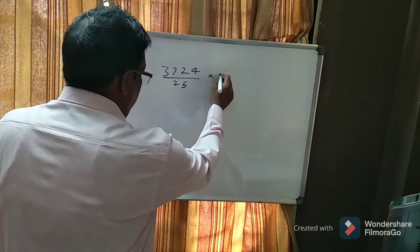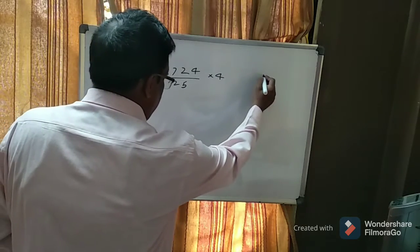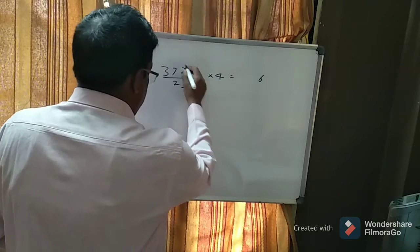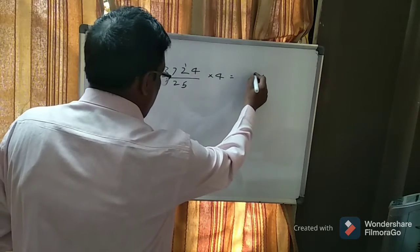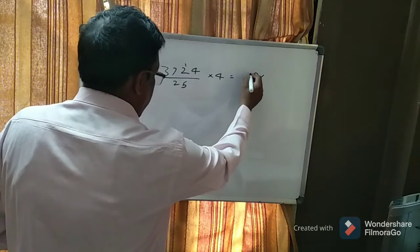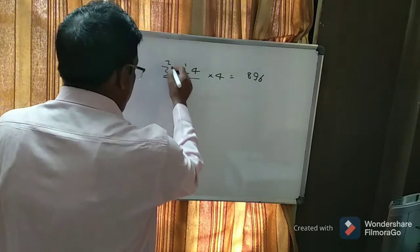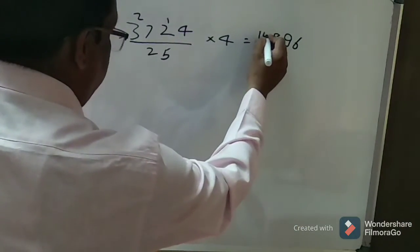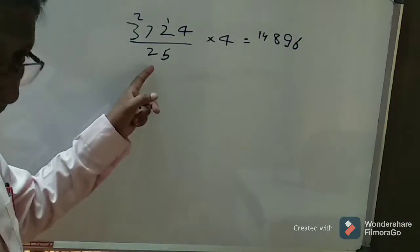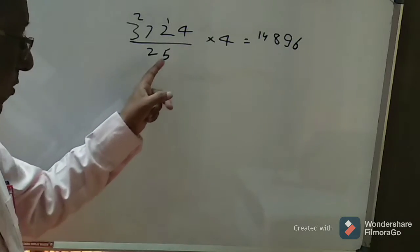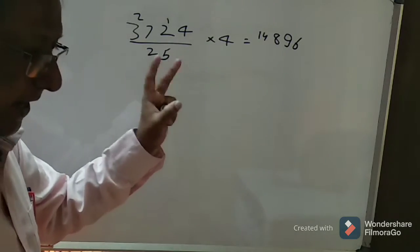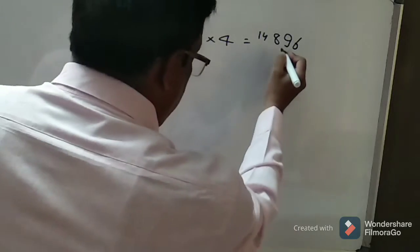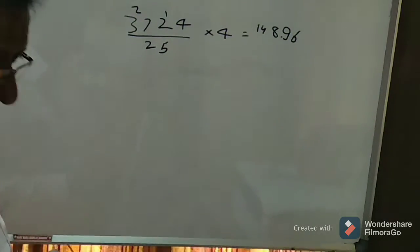Multiply the given number by 4. 4 times 4 is 16, carry 1. 4 times 2 is 8, plus 1 is 9. 7 times 4 is 28, carry 2. 4 times 3 is 12, plus 2 is 14. Now in the divisor we have 2 digit number, so we have to leave 2 numbers from the right hand side and put a point over here. Okay, so this is your answer.